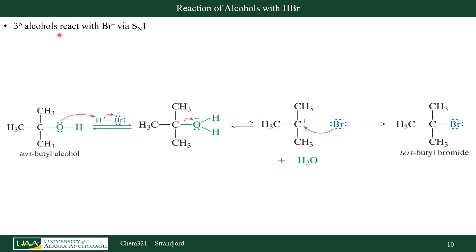Tertiary alcohols cannot react via SN2 because it's too hindered for attack, but they can undergo SN1 reactions. Here I have a tertiary alcohol, t-butyl alcohol. The first step is similar to SN2: I want to make the hydroxyl group a good leaving group, so it gets protonated by my acid. Because it's a tertiary alcohol, water can leave and form a stable carbocation, which then can be attacked by my nucleophile — my bromine anion in solution — to form t-butyl bromide.